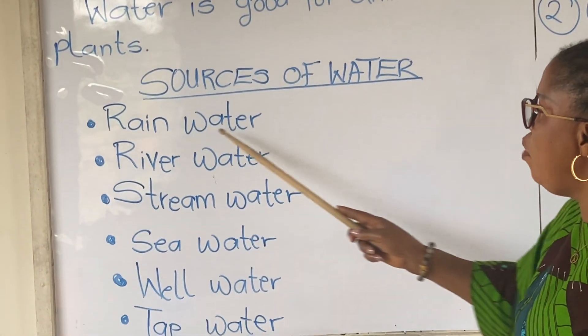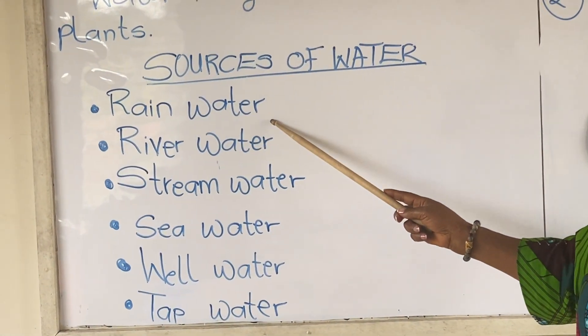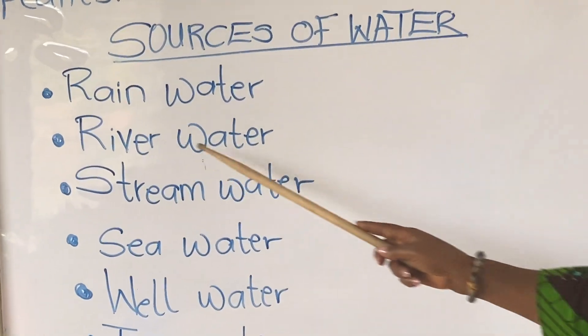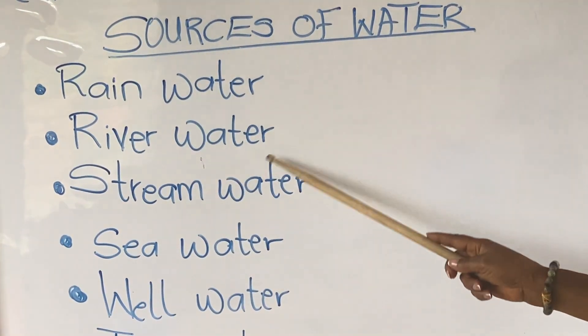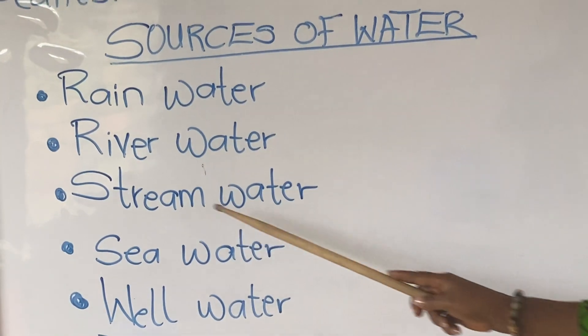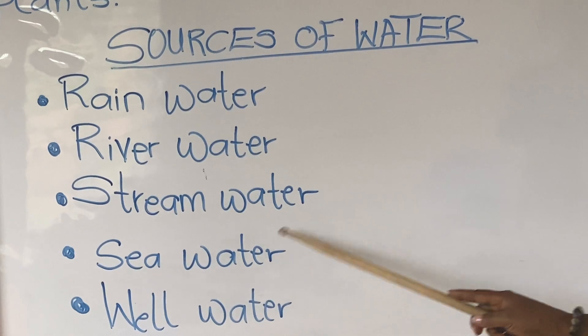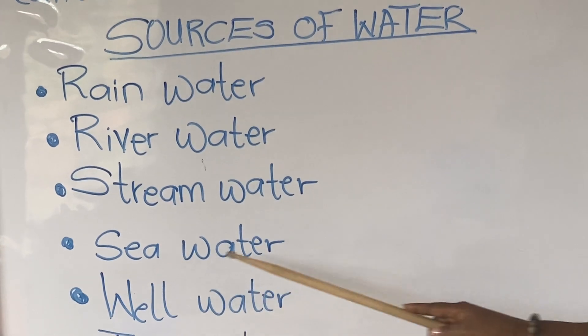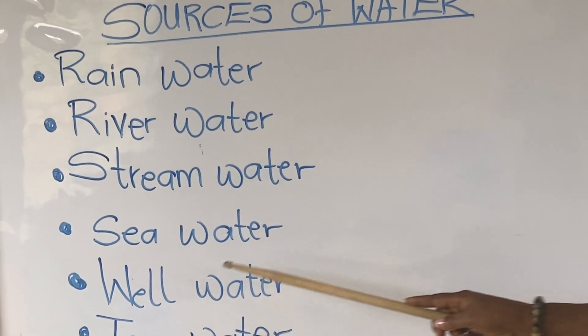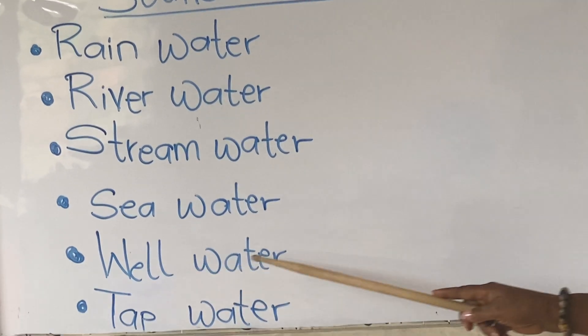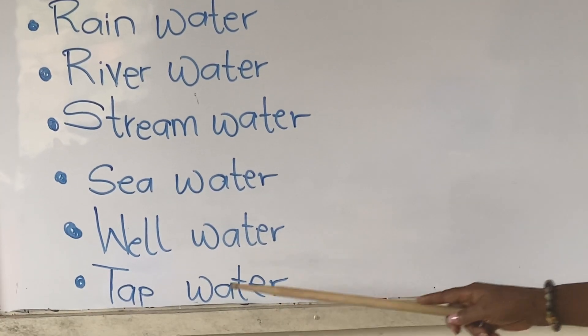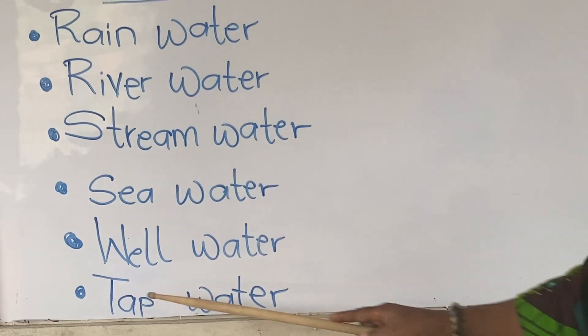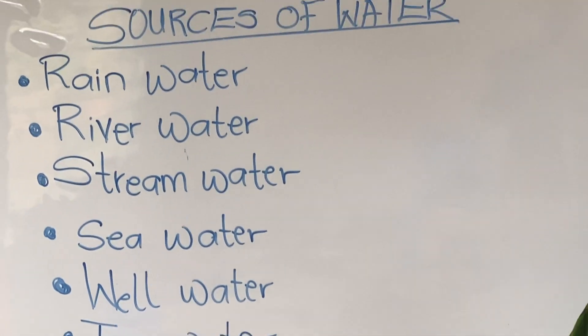We have rainwater, river water, stream water, sea water, well water, and tap water.